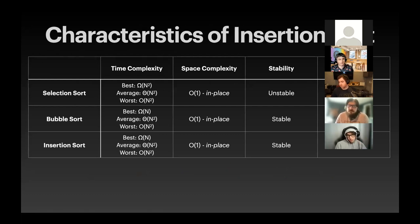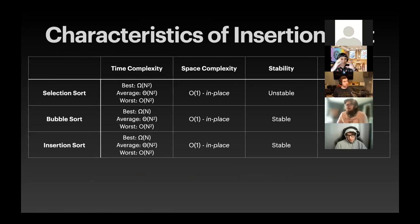Let's talk about the insertion sort characteristics. Time complexity: if we're given an array of numbers that's already in order, our best case scenario is we're not going to need to sort anything — that's O(n). That's what makes selection sort even crappier, because even if the data is in order you still have to go through and check every single thing. With insertion sort, it's also going to have an average and worst case scenario of O(n²). It's also in place — you saw that it was stable, and it obviously is a comparison sort.